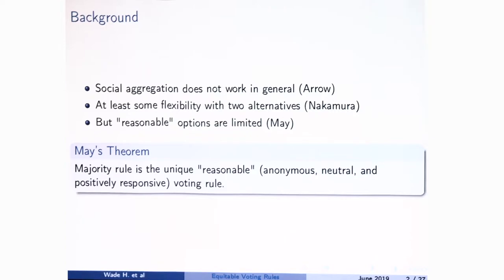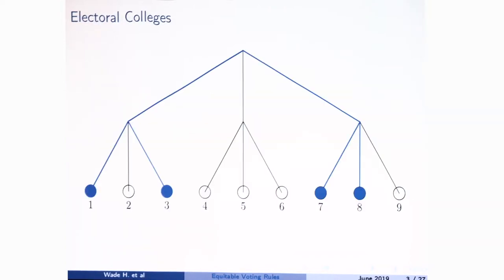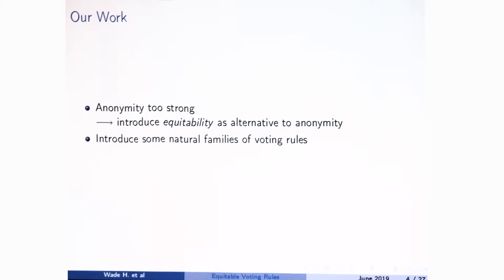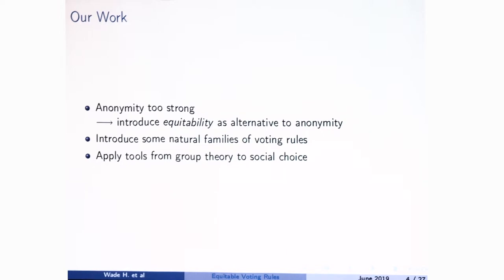We feel that was the point of anonymity, but what I'm going to talk about is that electoral colleges don't manage to fit this definition — this fails anonymity, but doesn't seem to give anybody extra power over anyone else. So we're going to suggest that anonymity is too strong and replace it with a new notion we call equitability. In doing so, we'll introduce natural families of rules — like electoral colleges — that get thrown out by anonymity, and apply results from group theory.